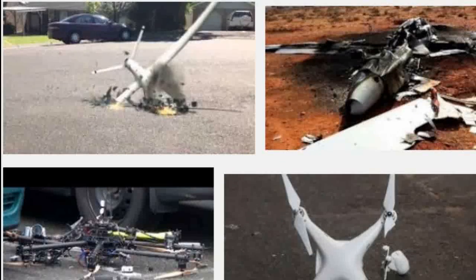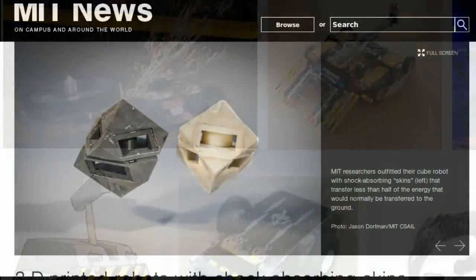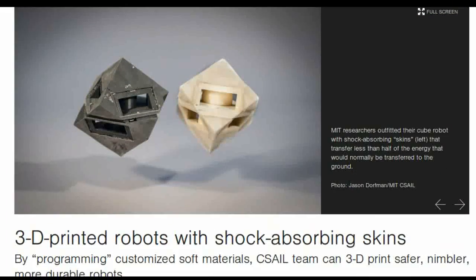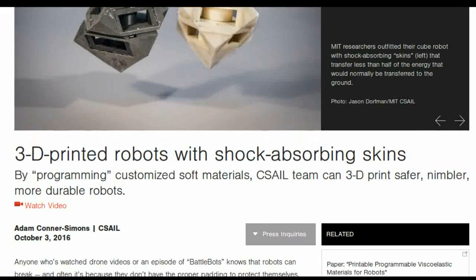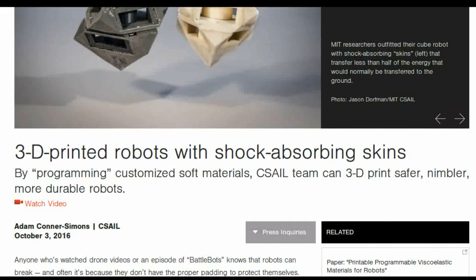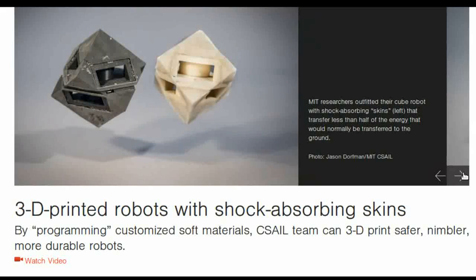But this week, researchers at MIT's Computer Science and Artificial Intelligence Laboratory will present a new method for 3D printing soft materials that make robots safer and more precise in their movements, and that could be used to improve the durability of drones, phones, shoes, helmets, and more.